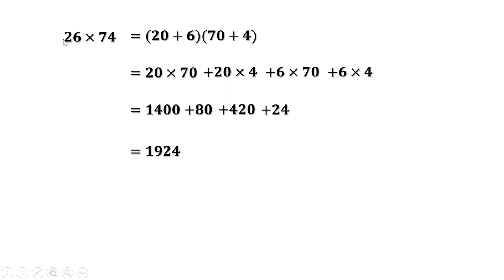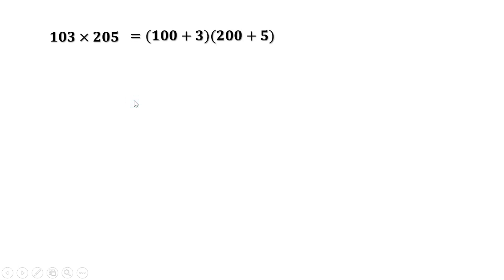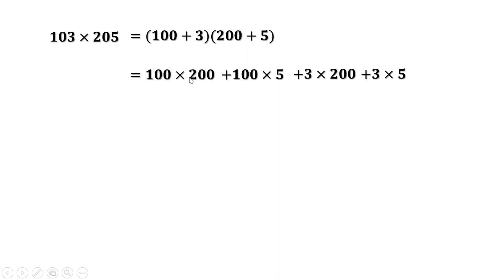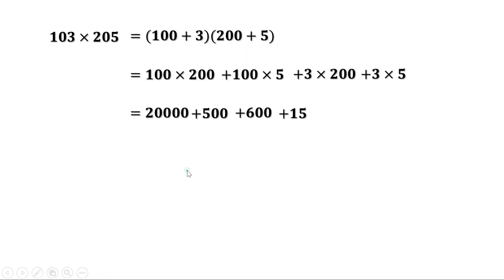Next problem: 103 into 205. 103 can be written as 100 plus 3 and 205 as 200 plus 5. This equals 100 into 200 plus 100 into 5 plus 3 into 200 plus 3 into 5. 100 into 200 is 20,000. 100 into 5 is 500. 3 into 200 is 600. 3 into 5 is 15. 20,000 plus 500 is 20,500, plus 600 is 21,100, plus 15 is 21,115.